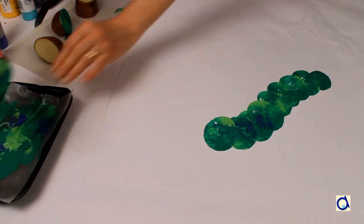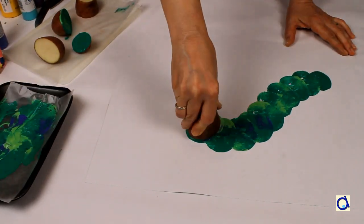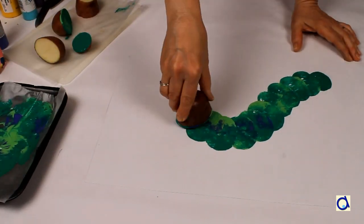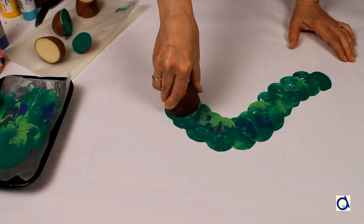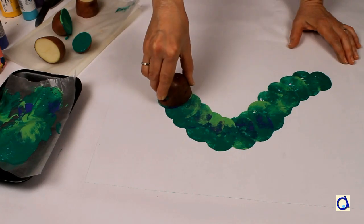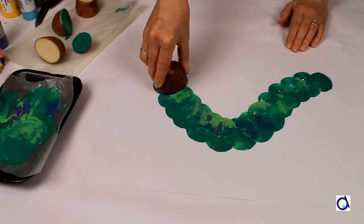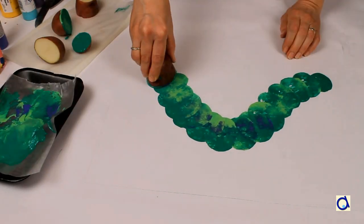Start by dipping the potato in one shade of green and then dip a part of the potato in the other shade of green. Then proceed by printing the potato to form the body of the caterpillar. You could even add a third colour, as I did myself for some sections.